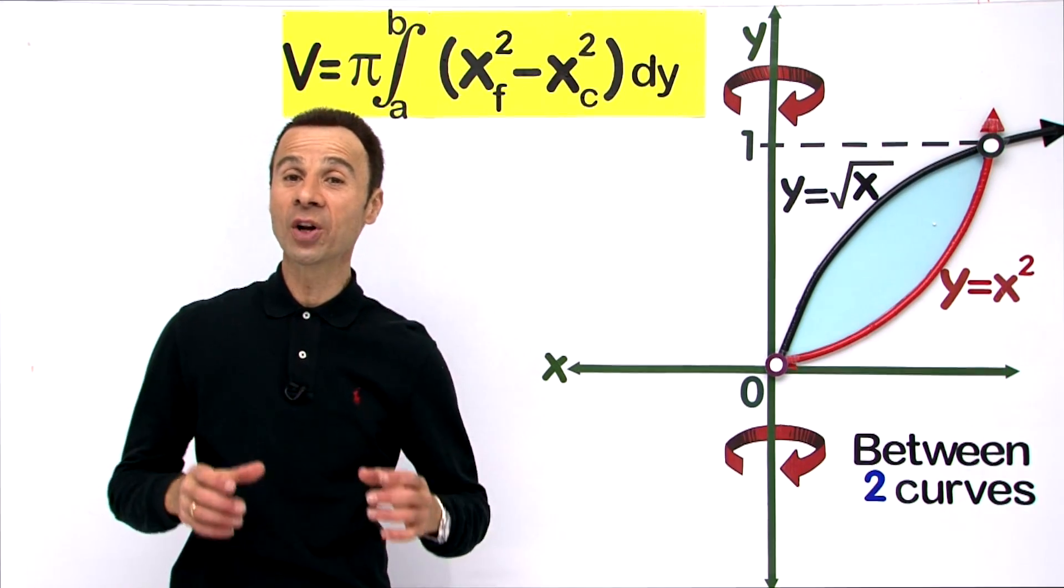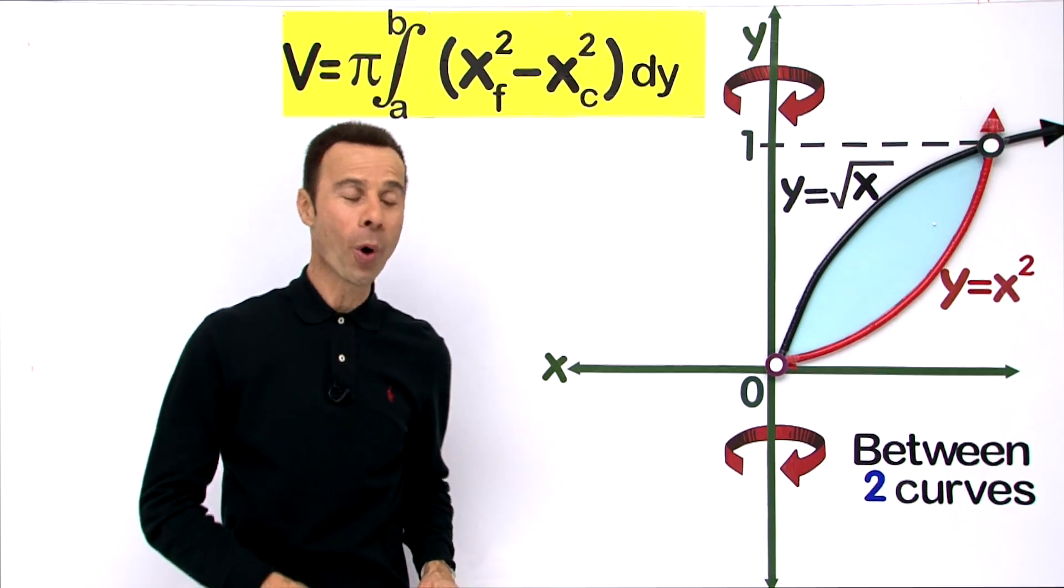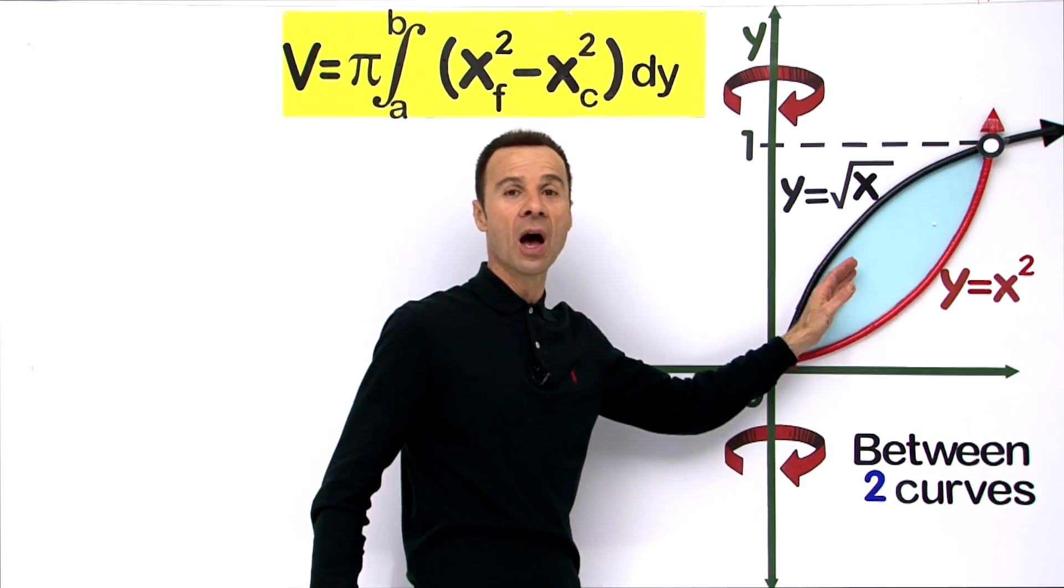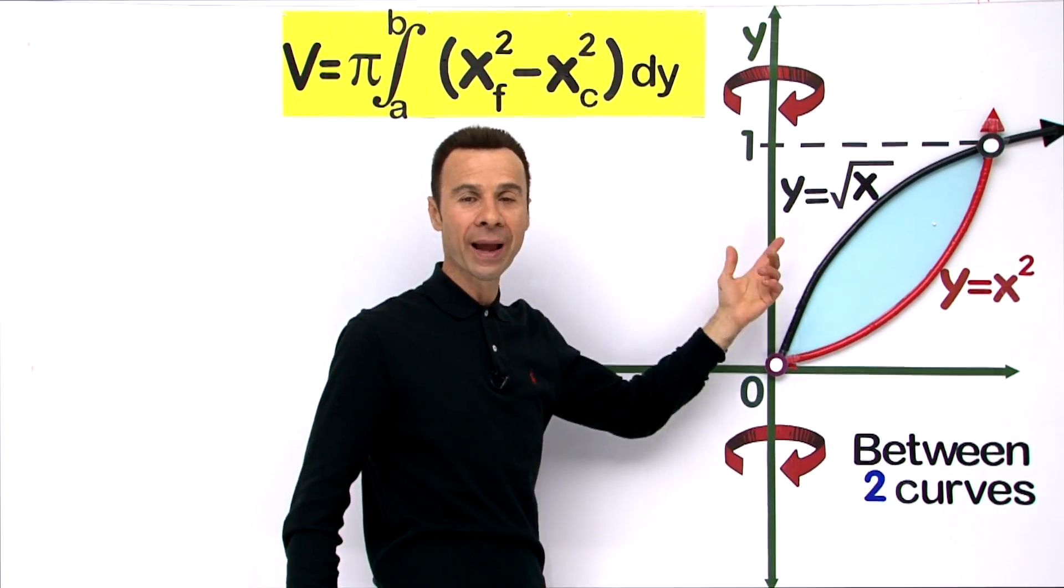Hi guys, we are asked to find the volume of revolution generated when the two curves are rotated around the y-axis.